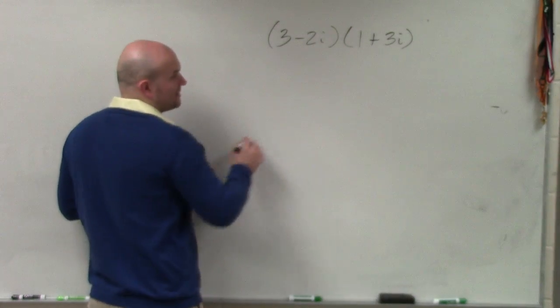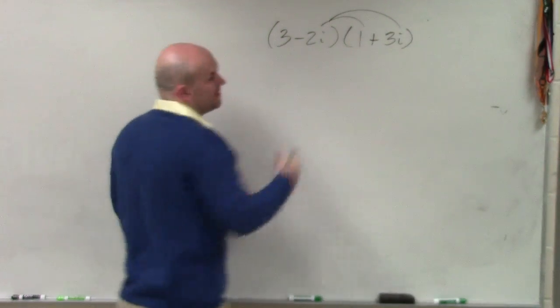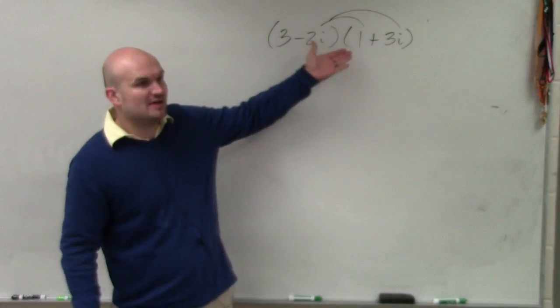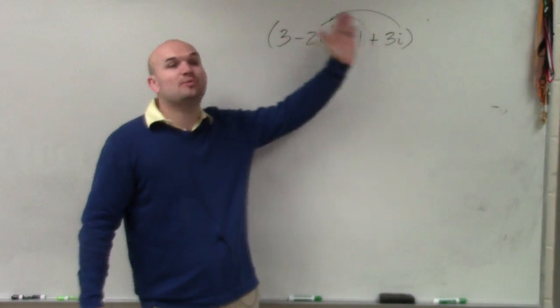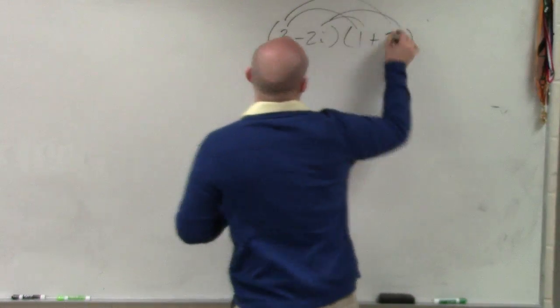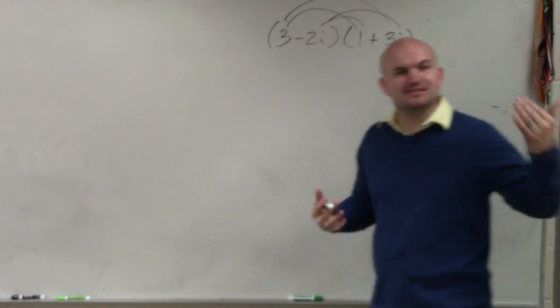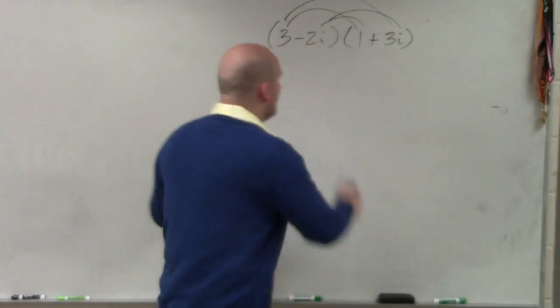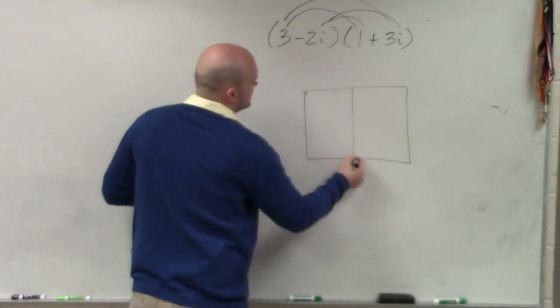So basically, on a problem like this, you guys can apply distributed property. Remember, distributed property states whenever you have a number outside of parentheses, you need to multiply that term times both of the terms inside of the parentheses, right? And you can do that with both of those terms. However, the easier way to do that was either using FOIL or my preferred method, which is the box method.